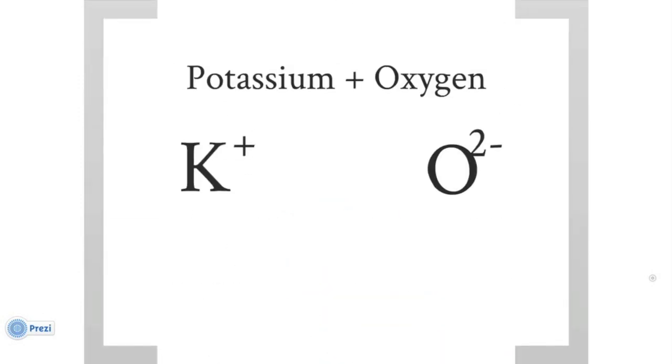Potassium and oxygen, potassium with a charge of plus 1, oxygen with a charge of minus 2, and when we cross those charges, we get K2O, potassium oxide.